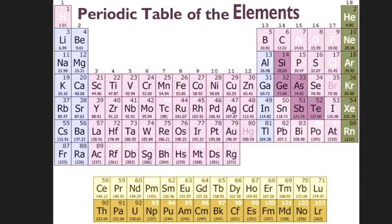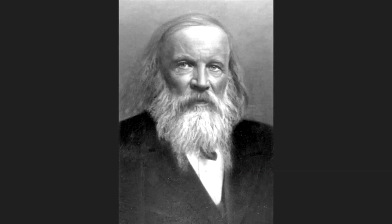The periodic table, as we would recognise it nowadays, was first drawn up in 1869 by the Russian scientist Dmitry Mendeleev. He had two strokes of genius which allowed the periodic table to exist in a form which you and I would recognise. The first one was that he left gaps in the table for as yet undiscovered elements. He was even able to predict the chemical properties of these elements when they were discovered, and that led to a great deal of new discoveries.